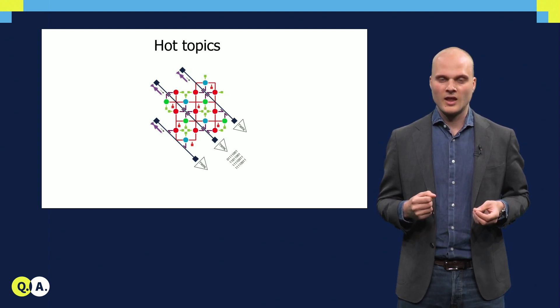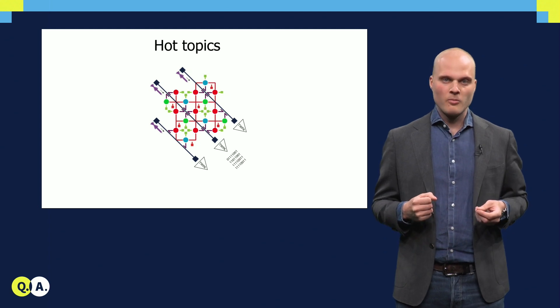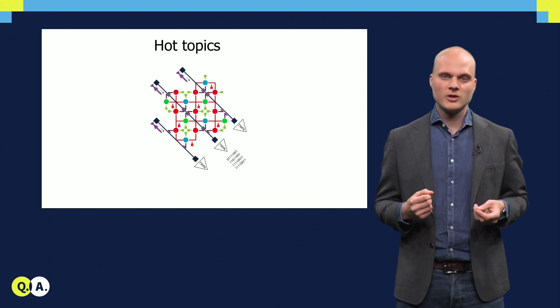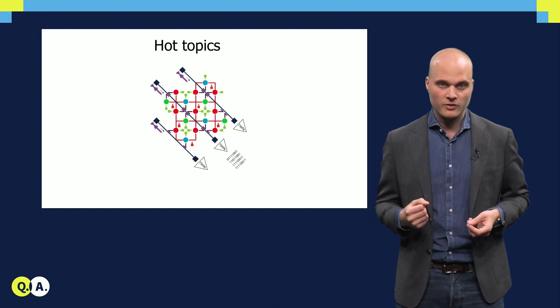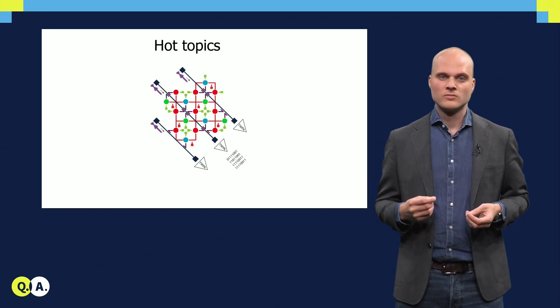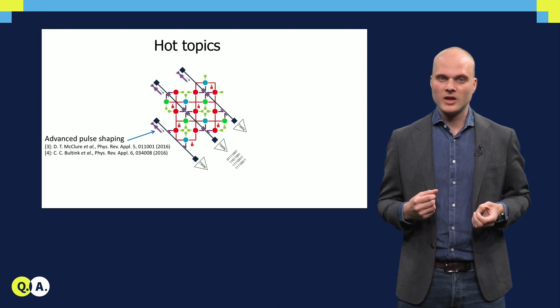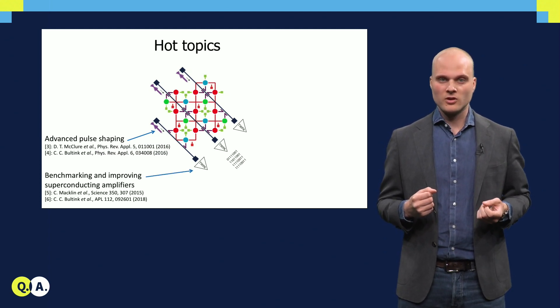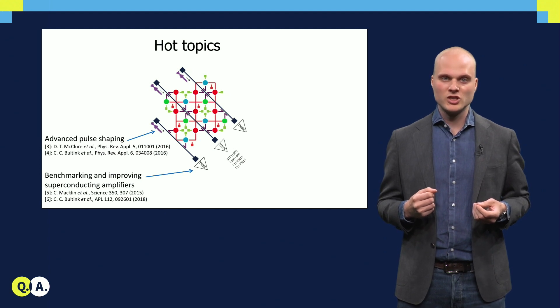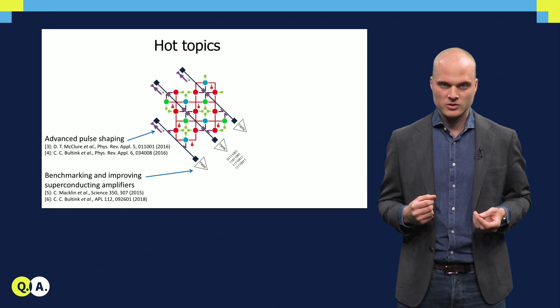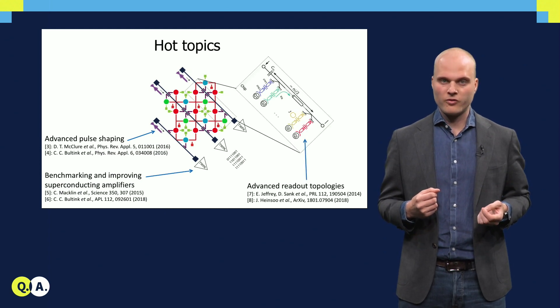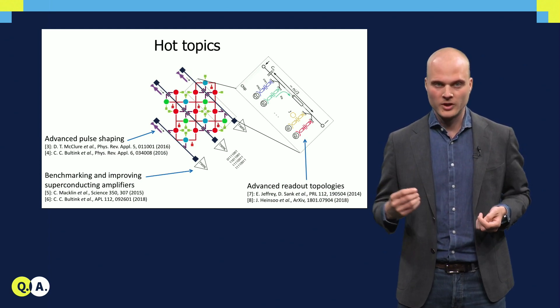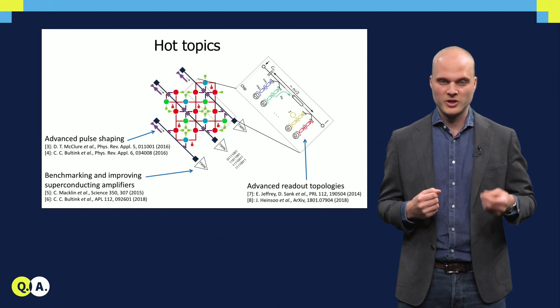This might sound to you like a finished story, however, there are many improvements to be made still to get to a fully scalable quantum computer. Exemplary topics that are currently being addressed in research, and which might also be attractive for you for additional reading, are advanced readout pulse shaping to quickly populate and depopulate the readout resonators to speed up the readout. Second, superconducting amplifiers to suppress noise in the readout amplification chain and methods to quantify their performance. Lastly, we work on advanced readout topologies, in this case using multiple cascaded readout resonators per qubit to increase the flux of photons and further speed up the readout.